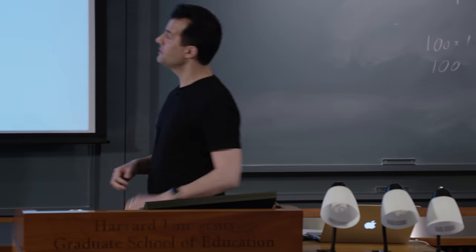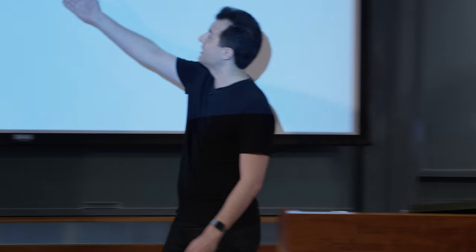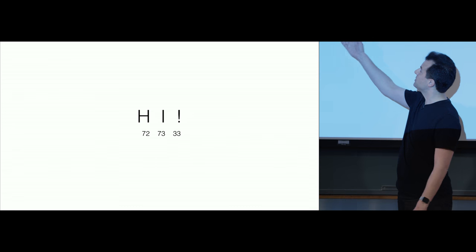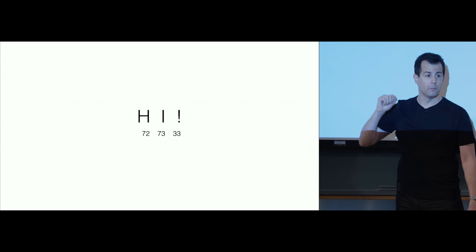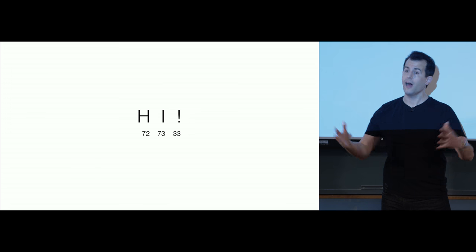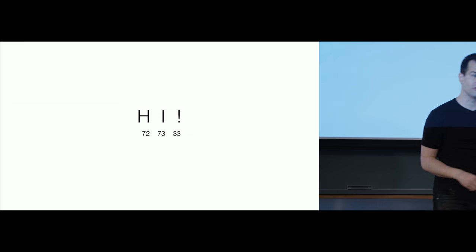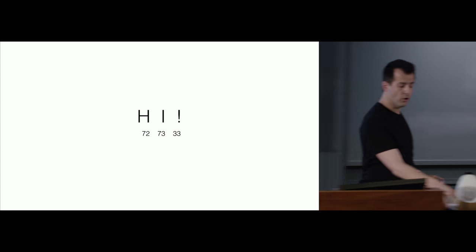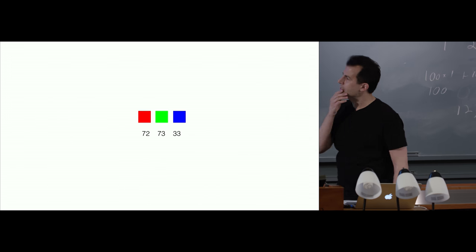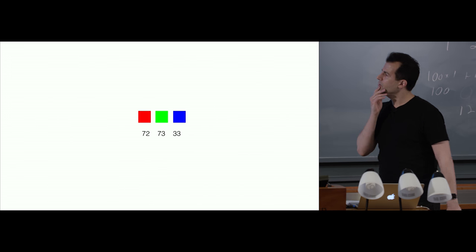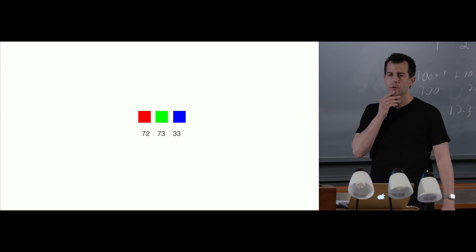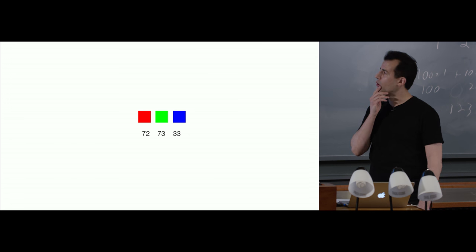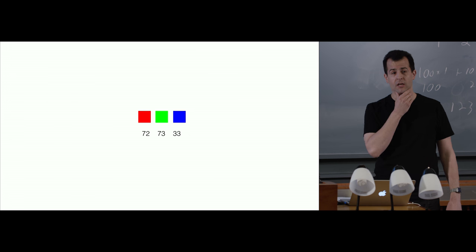An oversimplification, but it allows us to point out that in one context 72, 73, 33 might represent 'Hi' textually. It might also represent something in a term students might have heard — RGB: red, green, blue.